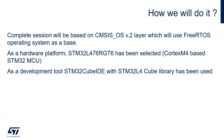Some differences could be visible within low-layer porting files, such as system interrupt code. As a development tool, STM32CubeIDE with STM32L4 Cube library has been used, but it is also possible to use STM32CubeMX with a toolchain from its supported list, for example IAR or SW4STM32.